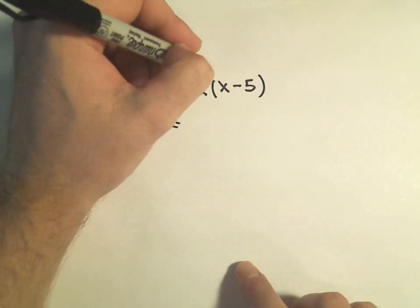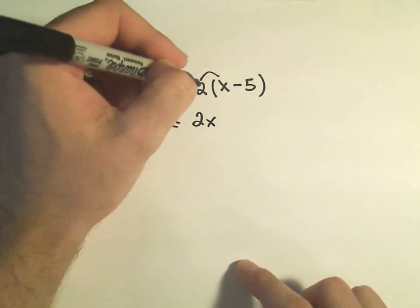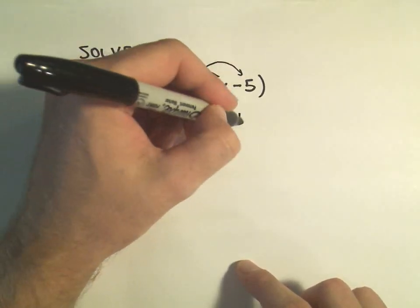On the right, if I distribute, we'll get 2 times x. And then 2 times negative 5 will give us negative 10.